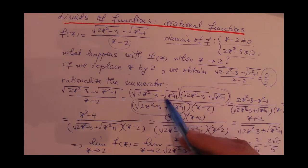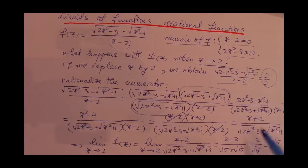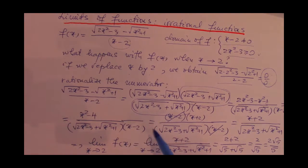So if we do so, instead of having this not so nice numerator, we get this nice numerator. And the good thing about it is the fact that now the numerator is x squared minus 4, which can be factored.